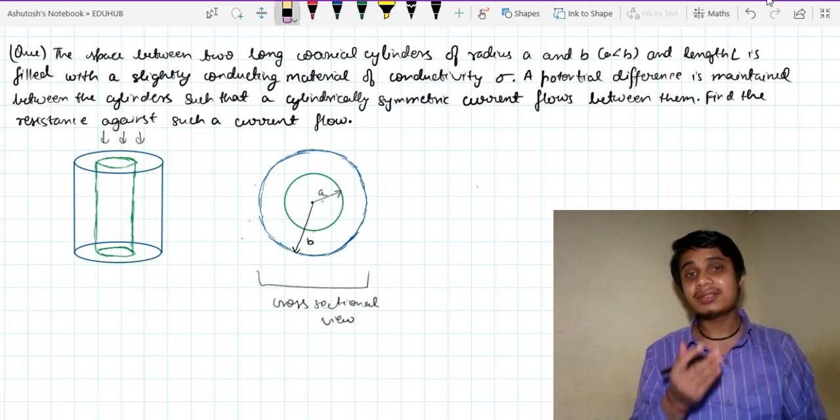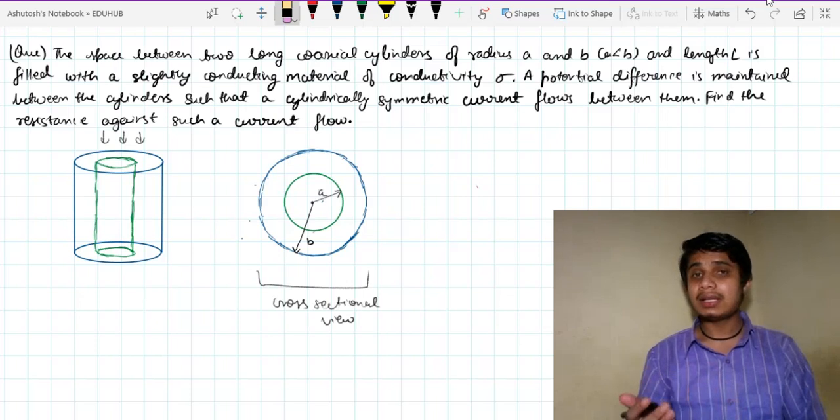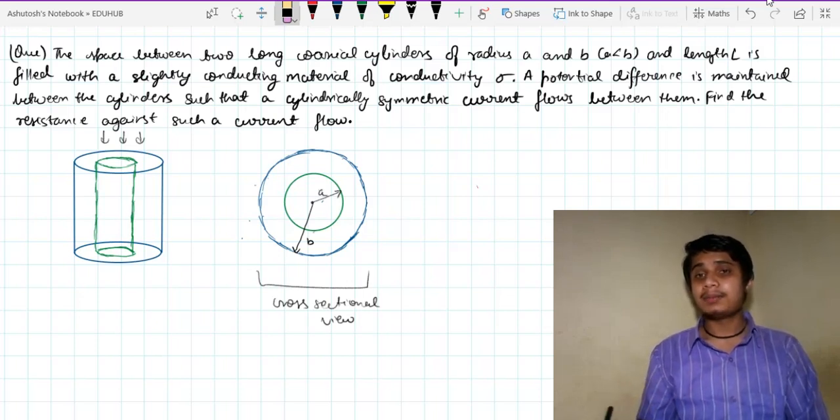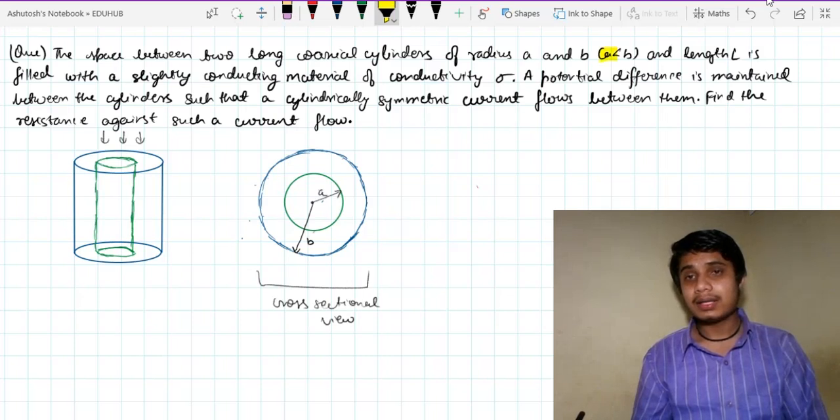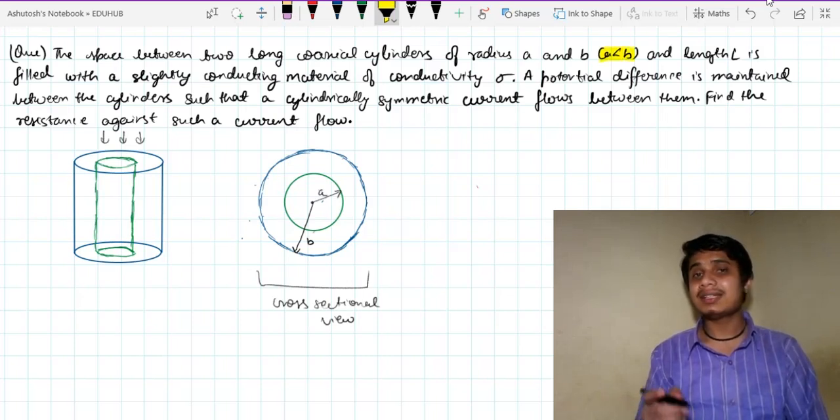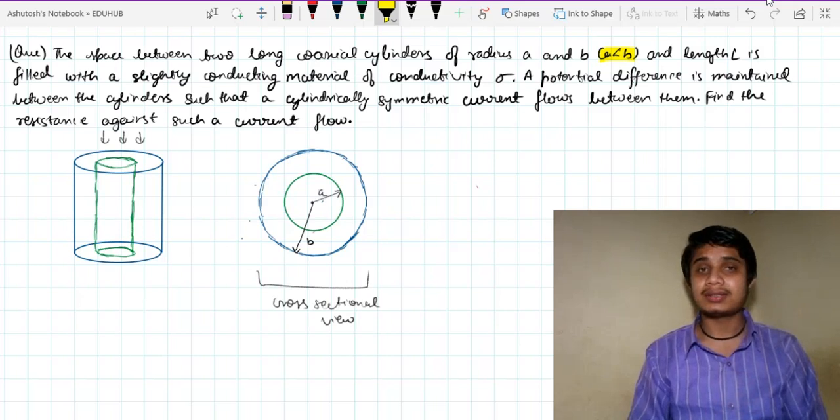So the radius of the cylinders are given to be A and B. In bracket it is given that A is less than B, this means A is the inner radius and B is the outer radius.